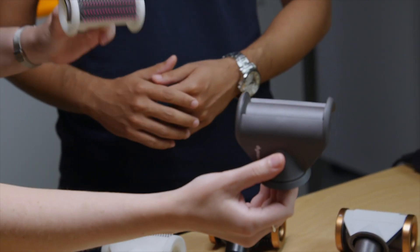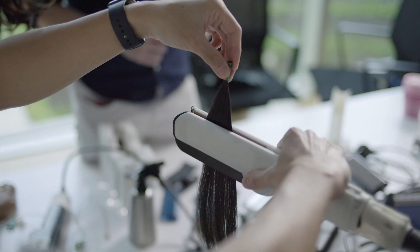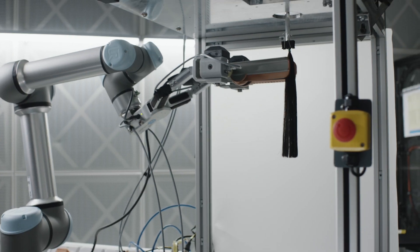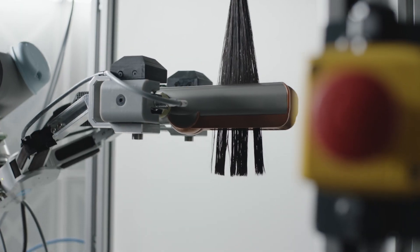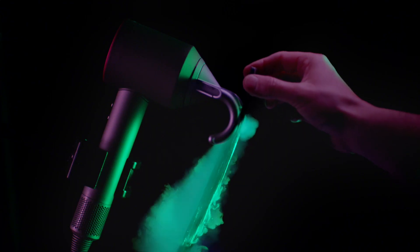As Design Engineers, we work in teams to design products, to build prototypes, and we test them using equipment and machinery. In the past, we've developed products such as hair straighteners, air purifiers, and hair dryers.